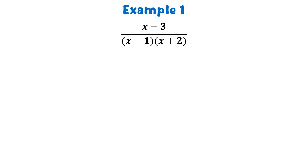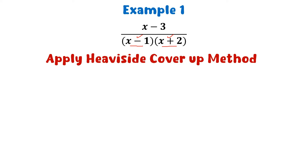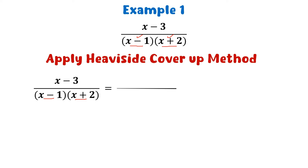Example 1: we take a proper rational fraction of this form. We see that the denominator has two non-repeated linear factors. We apply the Heaviside cover-up method to resolve this fraction into its partial fractions. Since there are two factors in the denominator, this fraction will be resolved into two partial fractions.